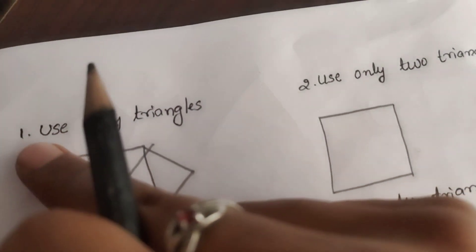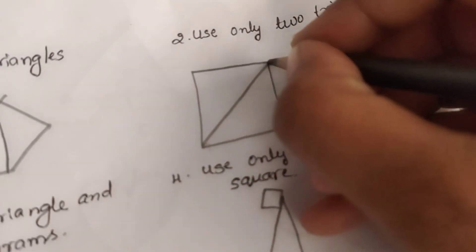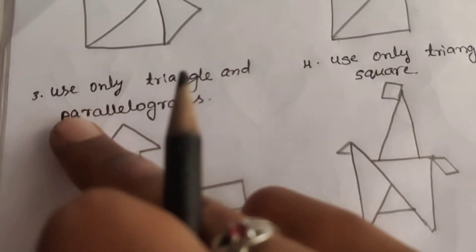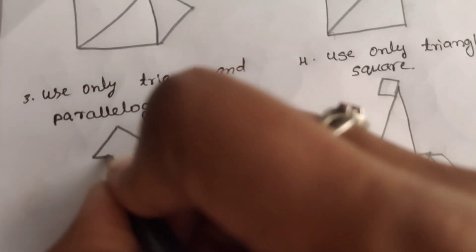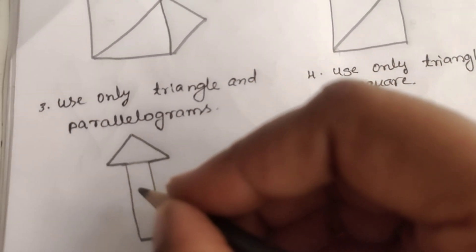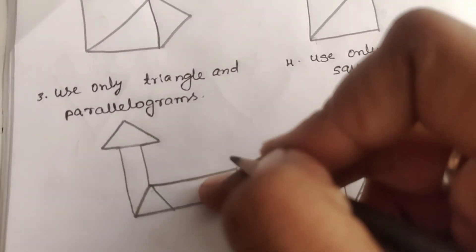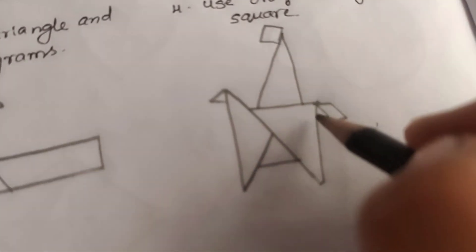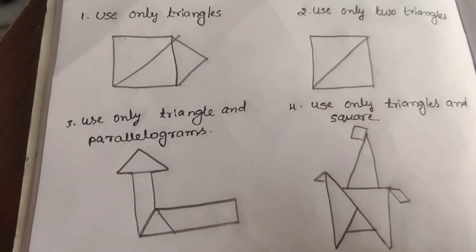The graph sheet shape has changed. Use only two triangles. Use only triangle and parallelogram. Use only triangle and parallelogram. This is a parallelogram. This is a square and one of the triangles. Use only triangles and square.